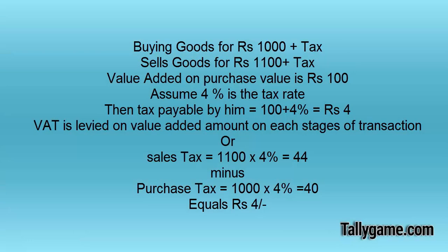With an example I will explain it. A retailer purchases a product for Rs.1000 plus tax and sells it for Rs.1100 plus tax. Then tax is levied on Rs.100. Rs.1100 is the sale value and Rs.1000 is the purchase value. As the retailer added Rs.100 for his profit, tax is levied on Rs.100, which is the value added amount. Suppose the tax rate is 4%, then he has to pay Rs.4 to the government.